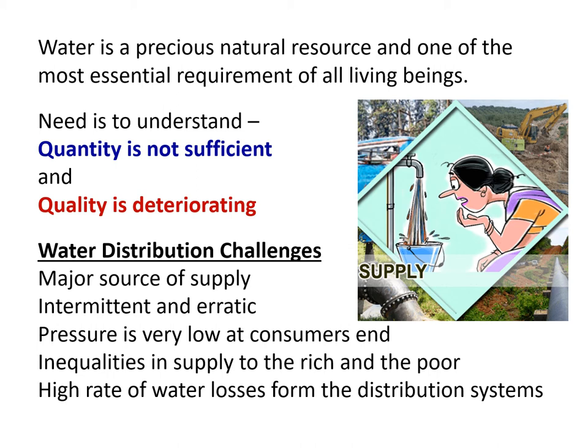We have intermittent and erratic supplies in our cities and towns — we don't get water around the clock from the public mains. Water pressure is also very low at consumer ends in several localities. There is inequality in supply to rich and poor communities, and a high rate of water losses from the distribution system is also a major area of concern.